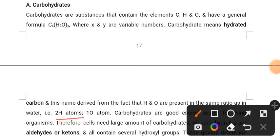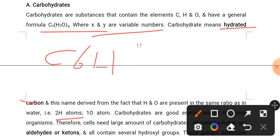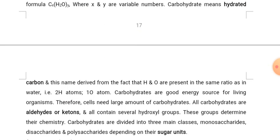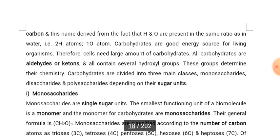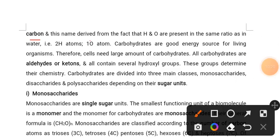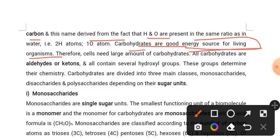Carbohydrate means hydrated carbon. In this case, hydrogen and oxygen present the same ratio, with the variable formula CxH2O — for example, glucose where x equals 6. Carbohydrates are a good energy source for living organisms. Therefore, cells need large amounts of carbohydrates.